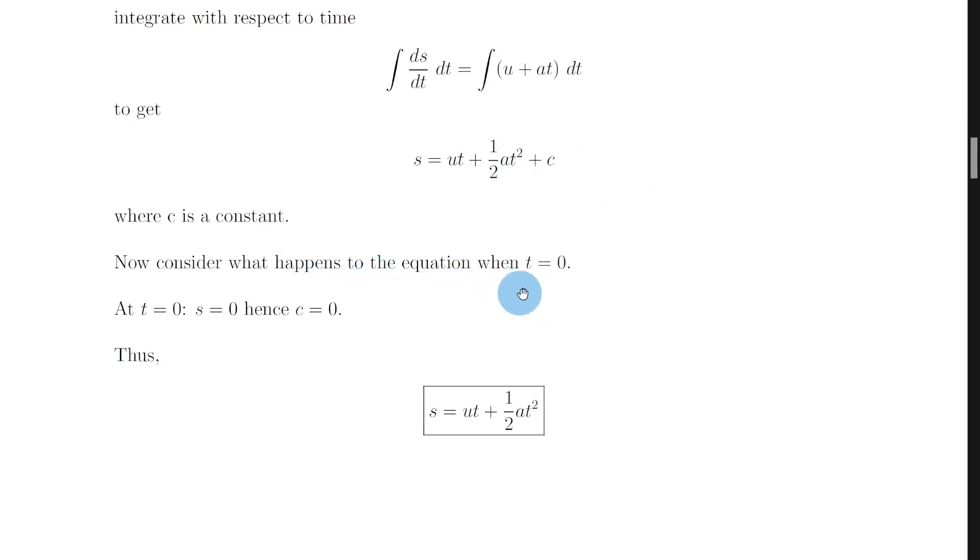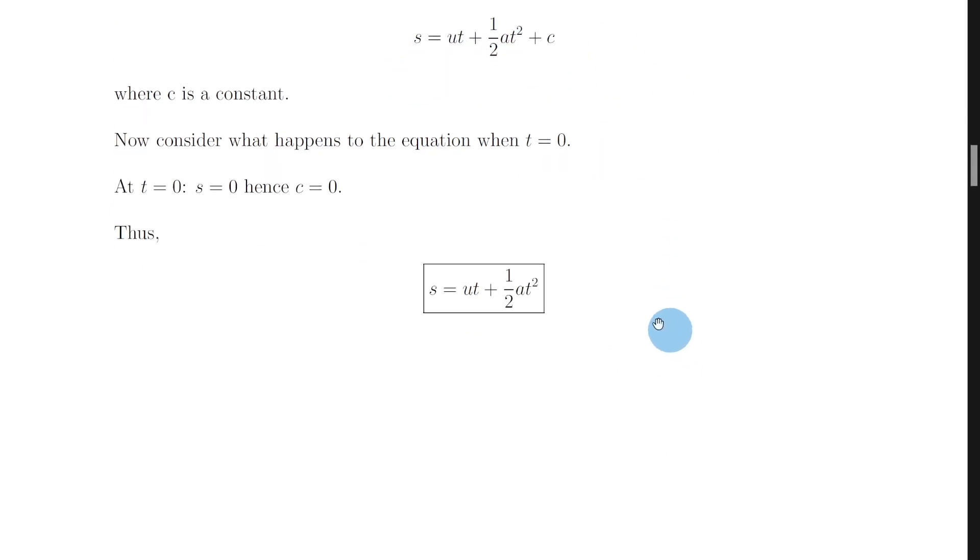And then you want to consider what happens when time t equals 0. So at time t equals 0 we say the displacement s of the object is 0 so therefore c is equal to 0 and that cancels out in this expression which gives us s equals ut plus a half at squared.